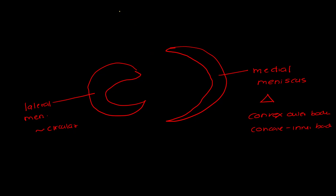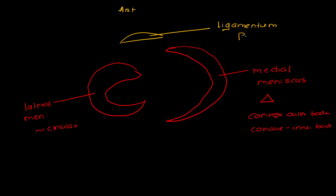Anteriorly, you would see the presence of the ligamentum patellae. The ligamentum patellae is the degenerate ligament formed from the tendon of the quadriceps femoris — the quadriceps femoris gets attached to the patella, and from the patella some fibers extend towards the tibia. This ligamentum patellae plays an important part in maintaining the femoral and patellar articular surfaces.